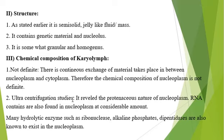Regarding the chemical composition of the nucleoplasm, also called karyolymph, it is not definite because there is a continuous exchange from the nucleoplasm to the cytoplasm. Nuclear material is continuously exchanged between nucleoplasm and cytoplasm. Therefore, the chemical composition of nucleoplasm is not definite — it changes.